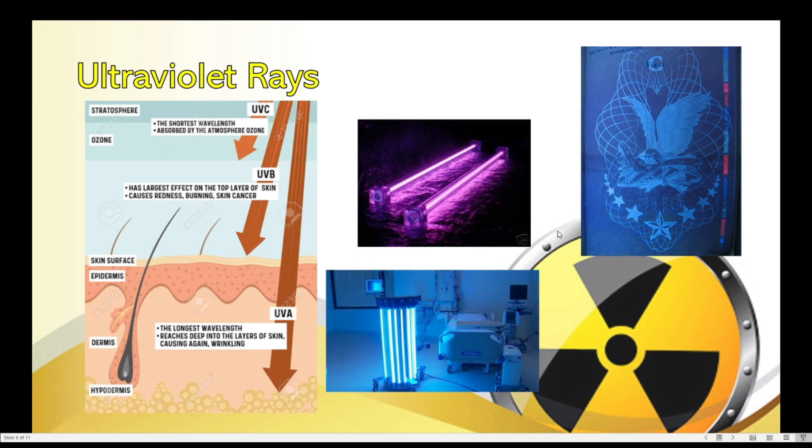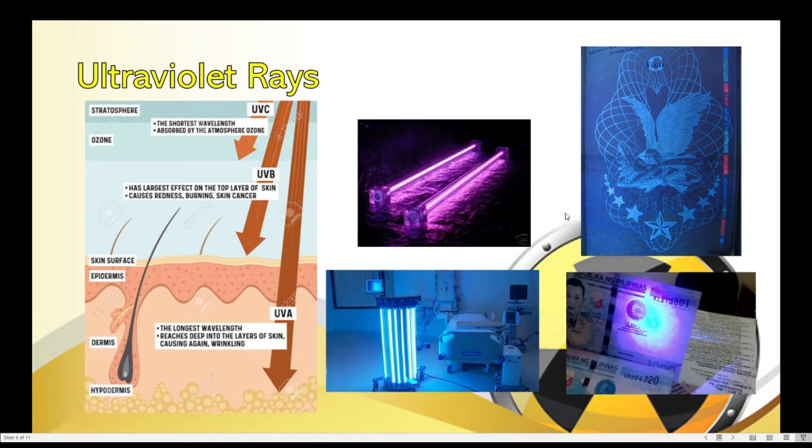And also, this is the most common application of ultraviolet, checking the authenticity of documents, specifically visas and money. Maybe you've seen this in stores when you're paying with larger bills, 1,000 pesos, 500 pesos. They check the marks on money using ultraviolet. Because there are some features of bills that we can't see without ultraviolet light. Okay, so next,